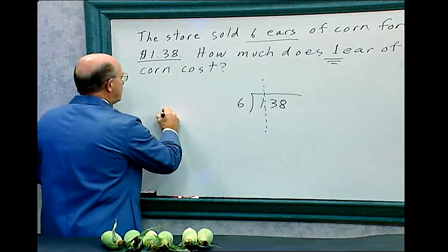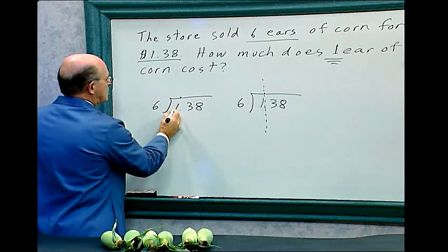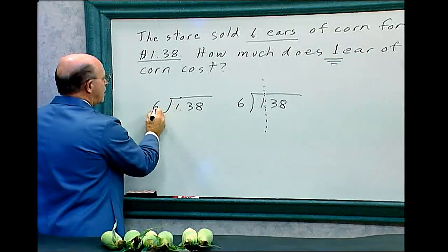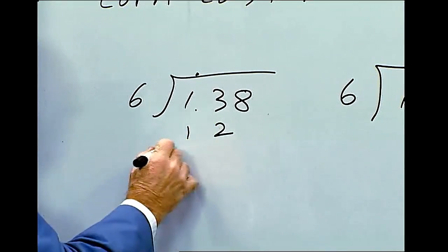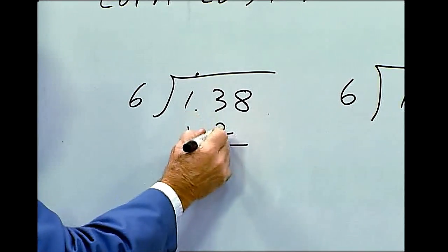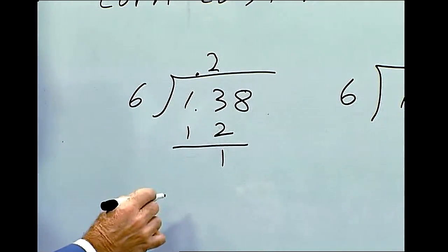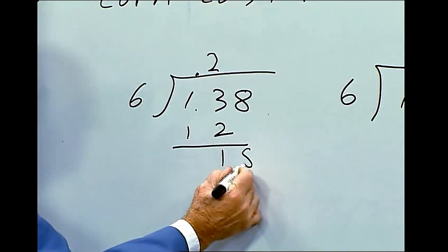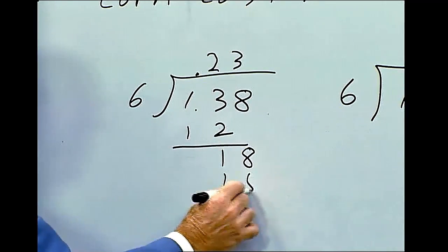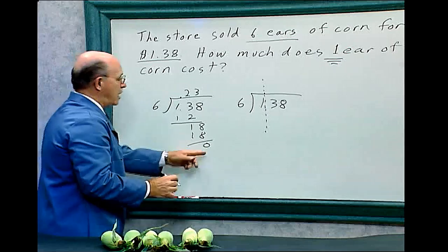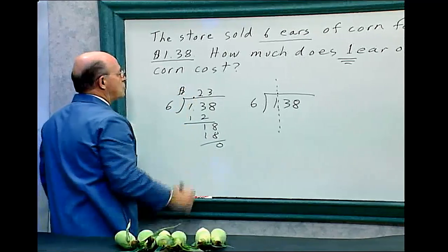Let's do it over here now. We have $1.38, divide that by six. Six doesn't go into one, so that's zero. Six goes into thirteen two times. Six times two is twelve. Two from three is one. We put the two directly above that three, then carry down the eight. Six goes into eighteen three times — eighteen — and that evens out to zero. So one ear of corn costs twenty-three cents.